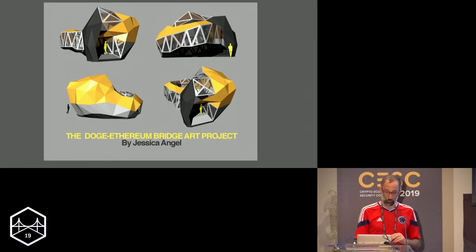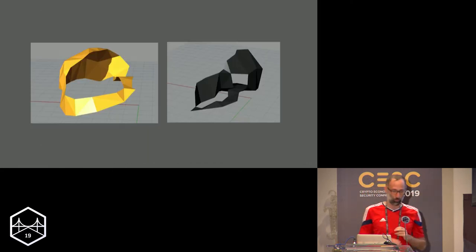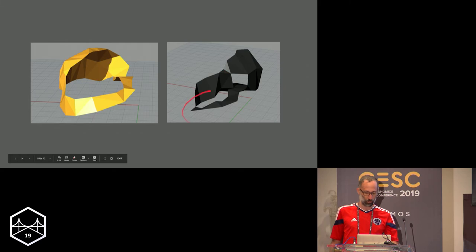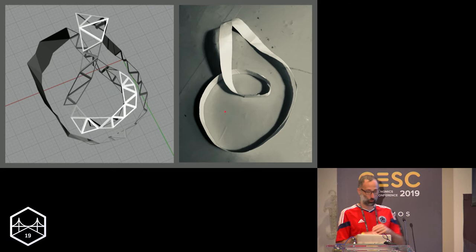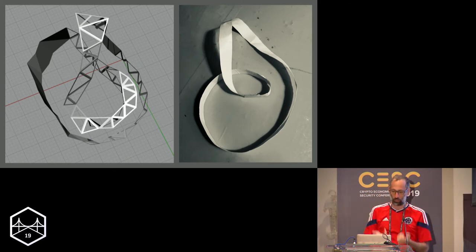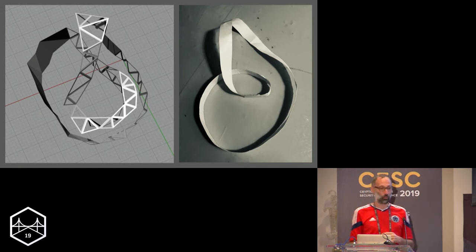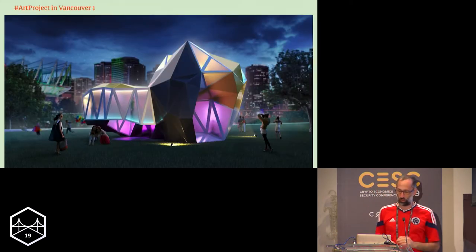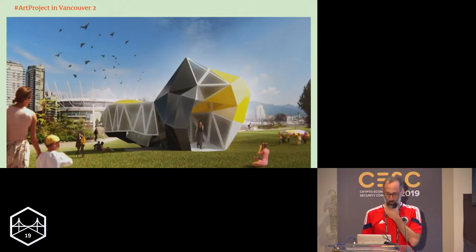That's when we brought artist Jessica Angel into this picture. We came up with a structure that might work — you have Dogecoin on the left and Ethereum on the right, both shaped like Möbius bands. If you glue two Möbius bands together — which you can't really do in three-space without self-intersection — you'd end up with something that looks like a Klein bottle. The world's largest Klein bottle would be sitting there in Vancouver, adjacent to the bay.